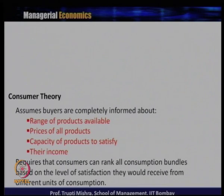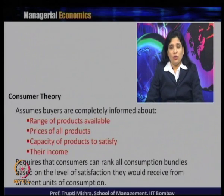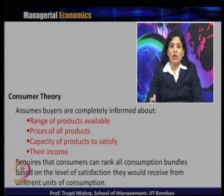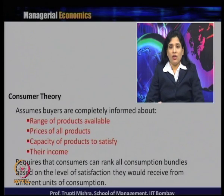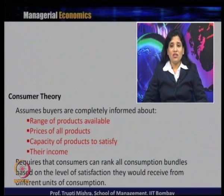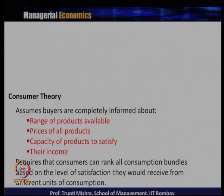This requires that all consumers can rank all consumption bundles based on the level of satisfaction they would receive from different units of consumption. If there are 10 products available but income allows spending on only 2 or 3, the rational consumer first ranks on a priority basis — what is the requirement and the usefulness from each product — then decides how much to buy.